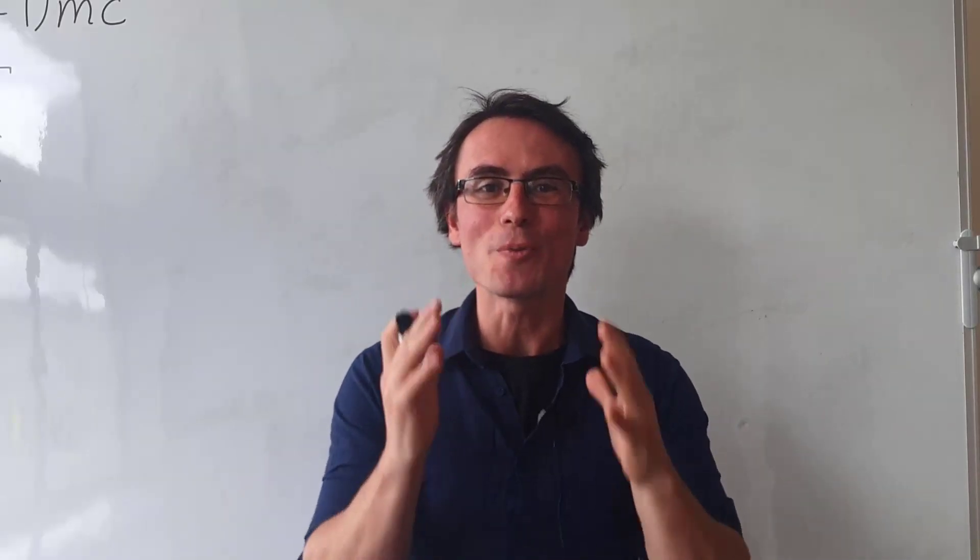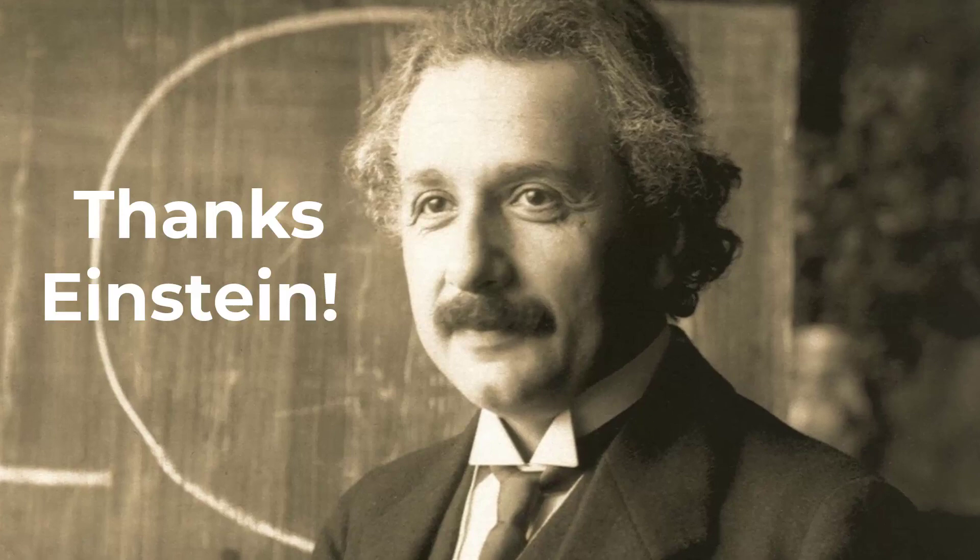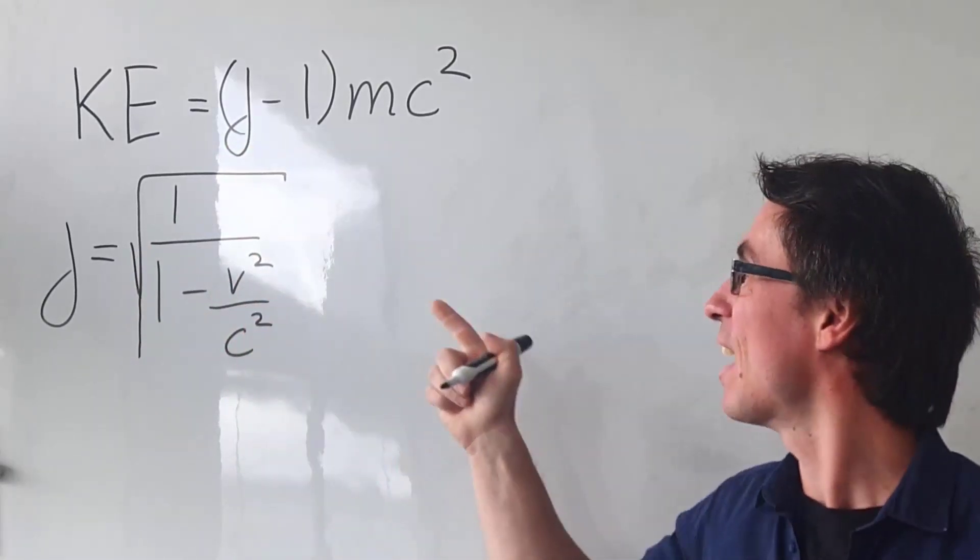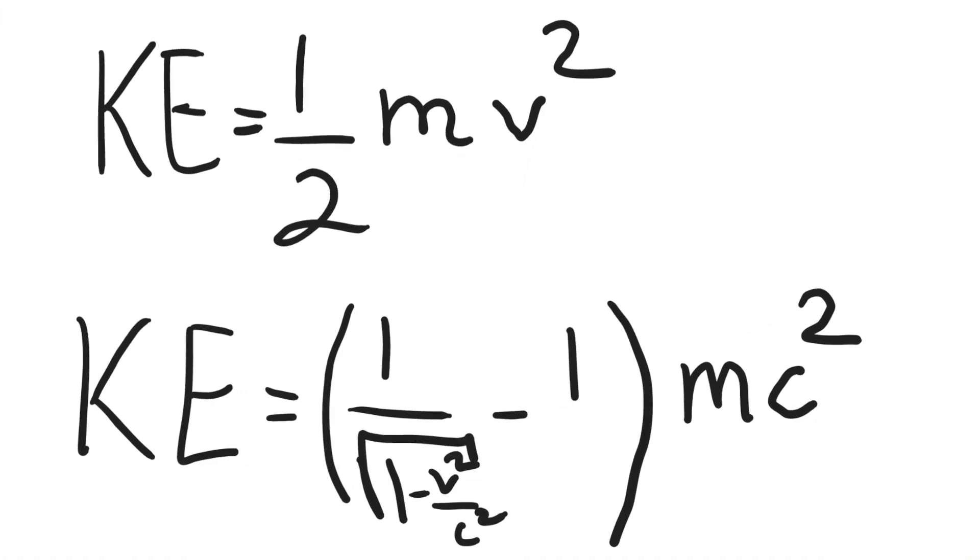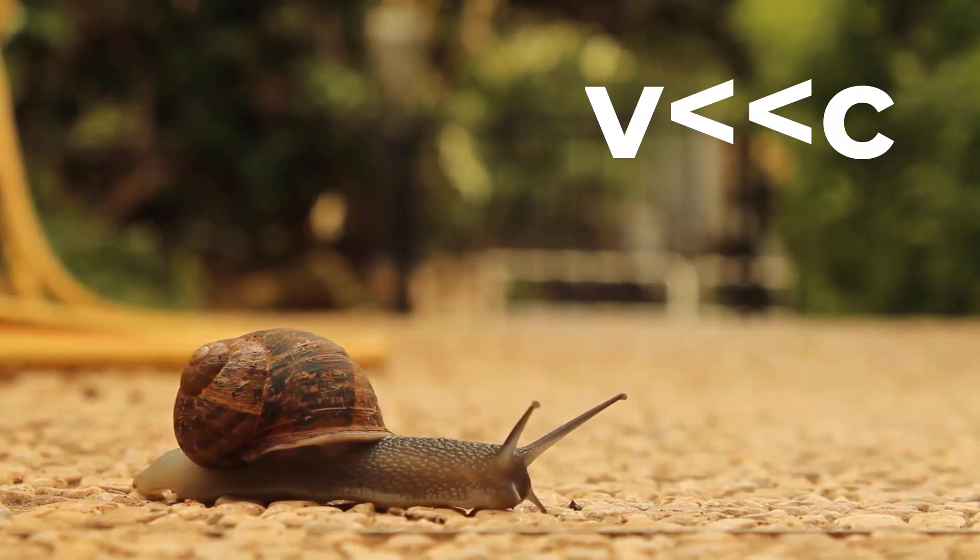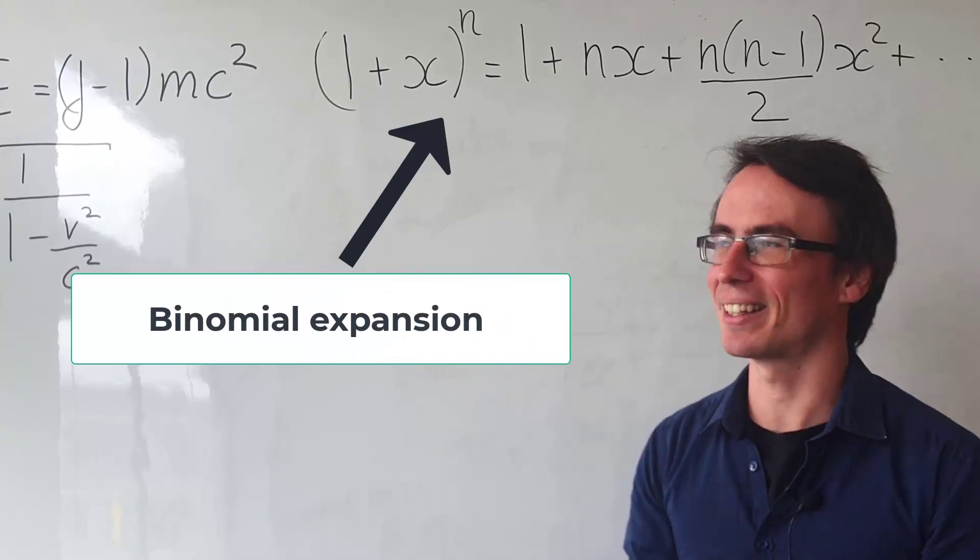The kinetic energy formula is a relativistic approximation. Einstein's theory of relativity gives us this expression where gamma is the relativistic factor. This expression is quite different to a half mv squared, but surely at low speeds those two expressions should be similar. Well, let's apply the binomial expansion and investigate this.